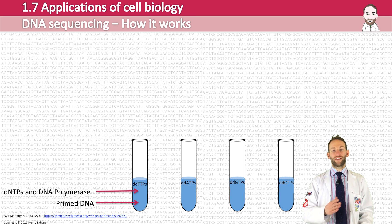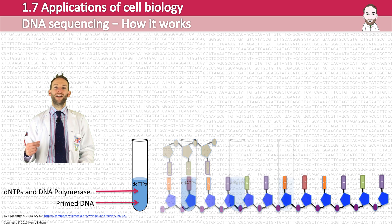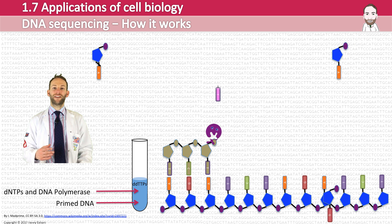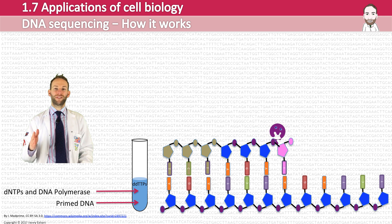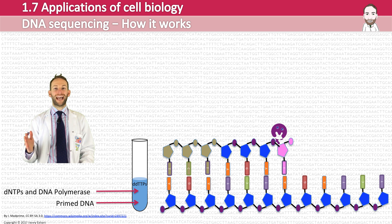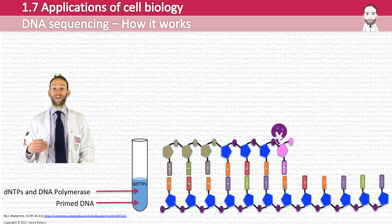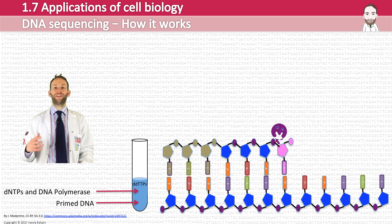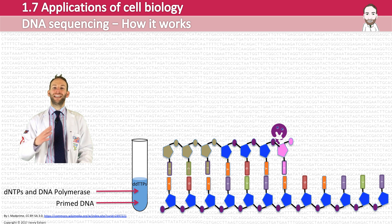DNA polymerase binds to the primer and makes complementary strands using the DNTPs, but at a particular point a DDNTP could bind and the sequence will be terminated at that point. It won't always stop at the same point because it is random whether a DNTP or a DDNTP binds. The DDNTP will bind at some point and terminate the strand. This happens equivalently in all four samples, each with a different DDNTP.